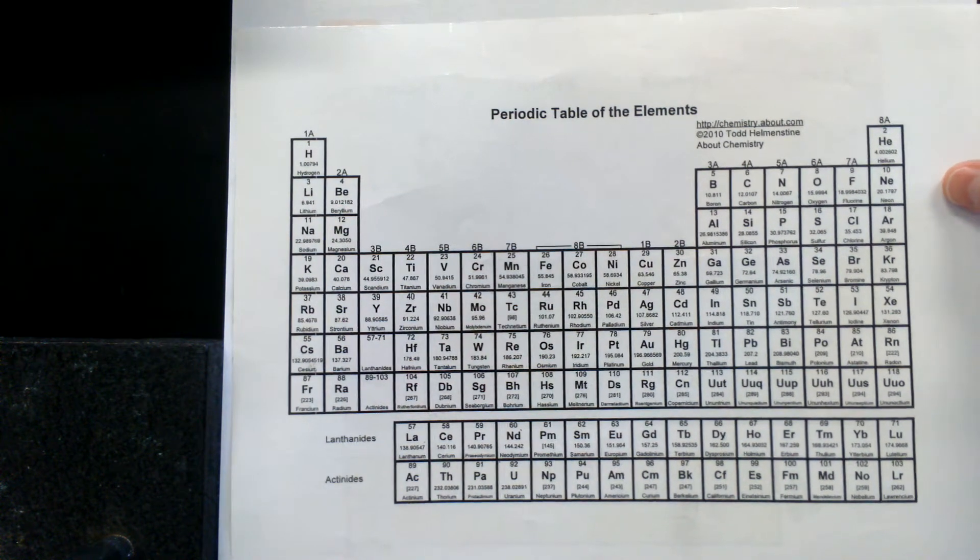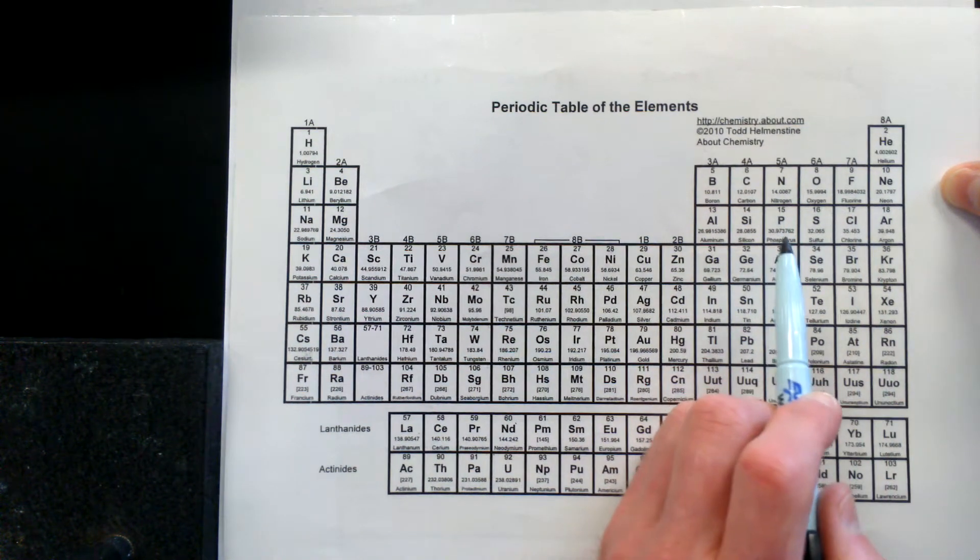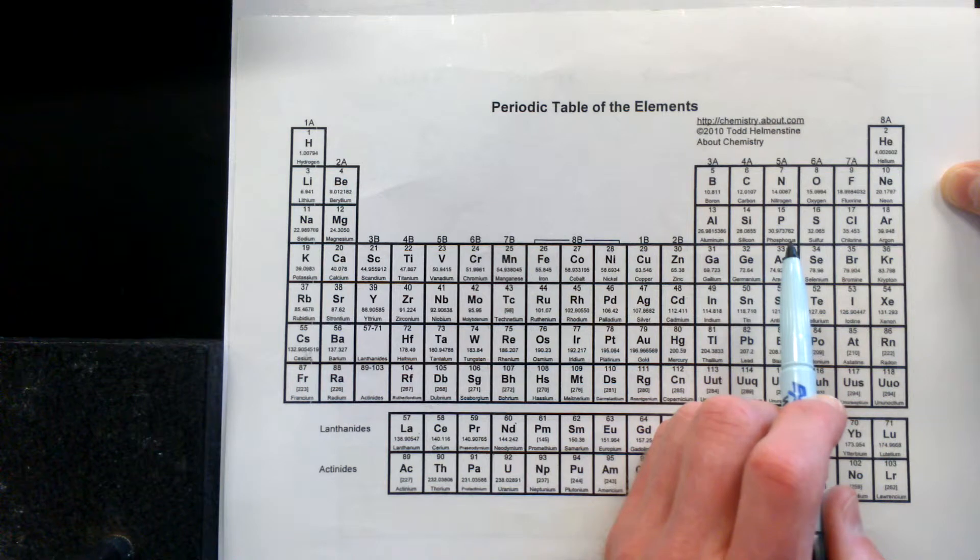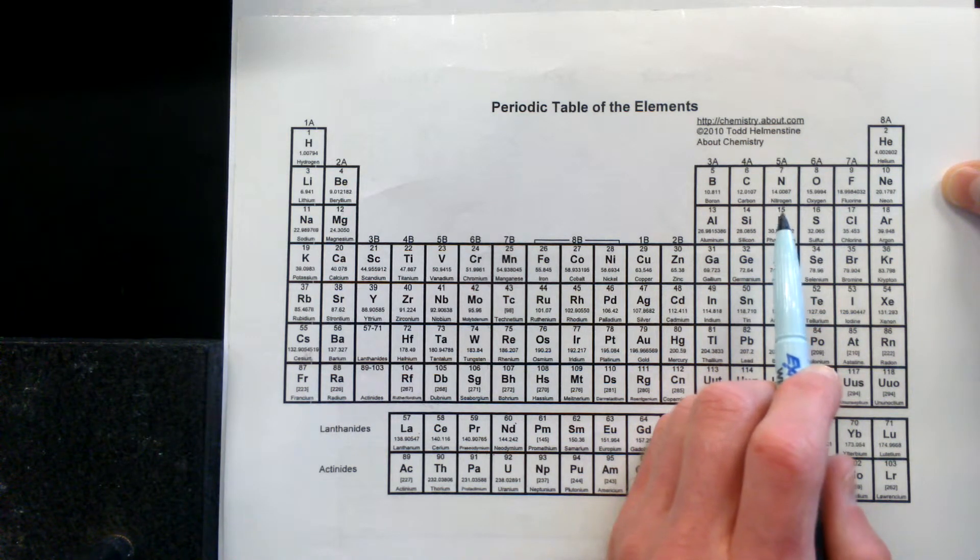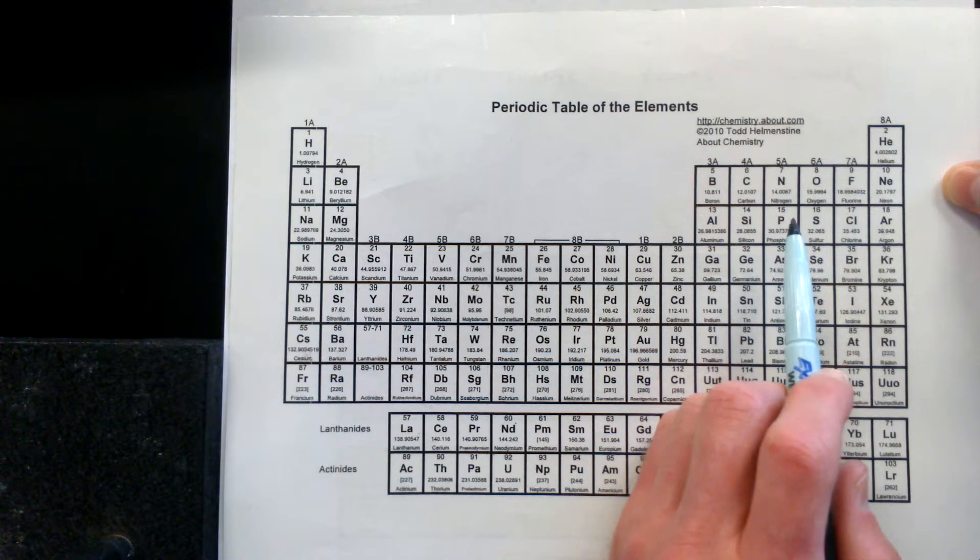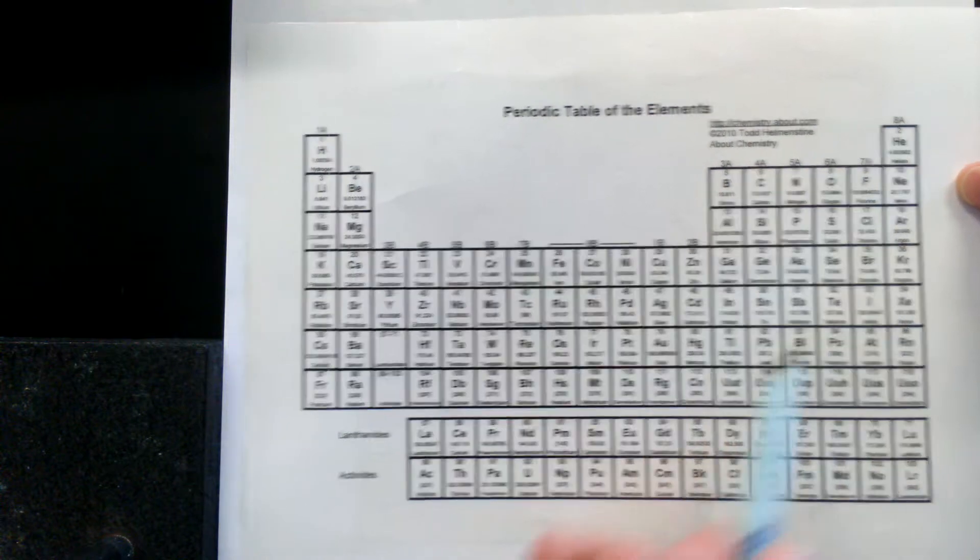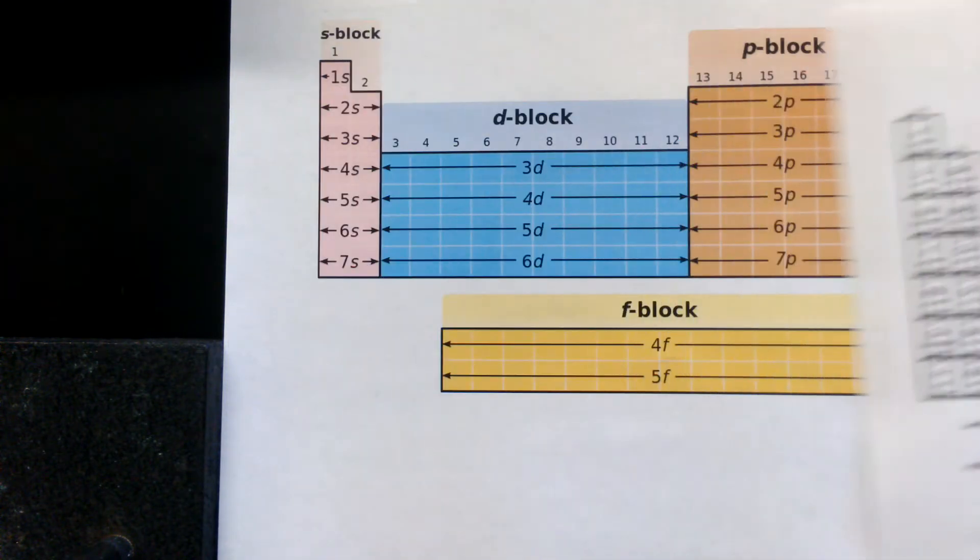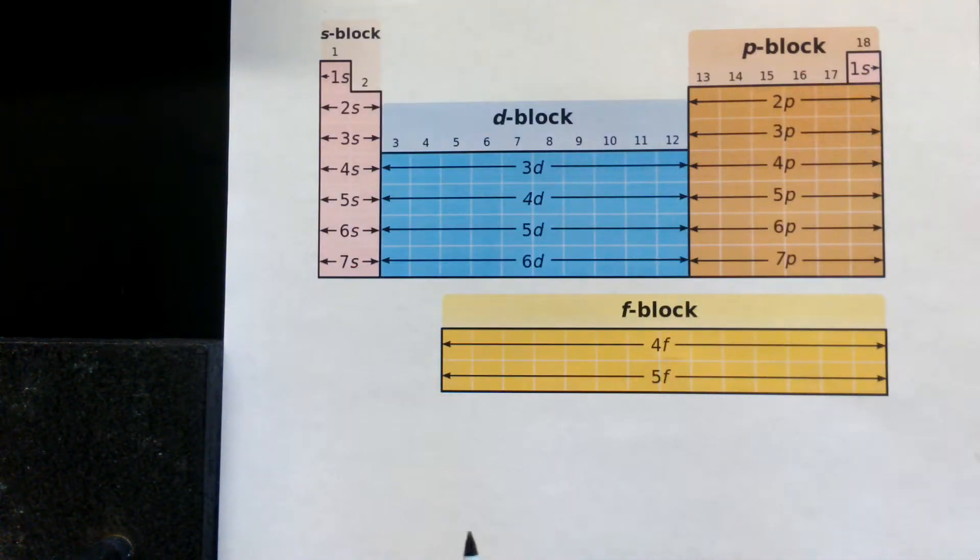Let's say we start with phosphorus here, number fifteen. Phosphorus is number fifteen, symbol is P, atomic number is fifteen, so we have fifteen protons and we have fifteen electrons to assign. Now I'm going to use this block configuration periodic table to help assist us with this.